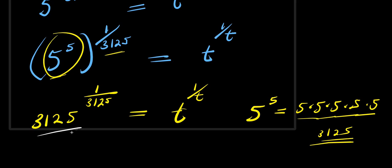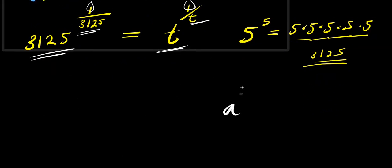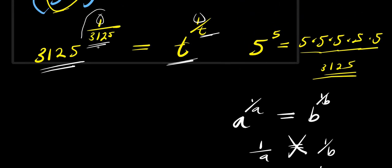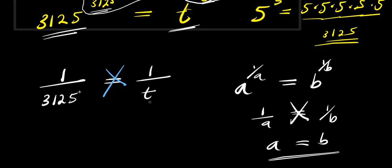So at this point, this and this are the same structure. If you have a to the power of 1 over a, equals b to the power of 1 over b, that means 1 over a equals 1 over b. Cross-multiplying gives a equals b. Applying the same identity here, I have 1 divided by 3125 equals 1 divided by t. Cross-multiplying gives t times 1, that is t, equals 3125 times 1, that is 3125.